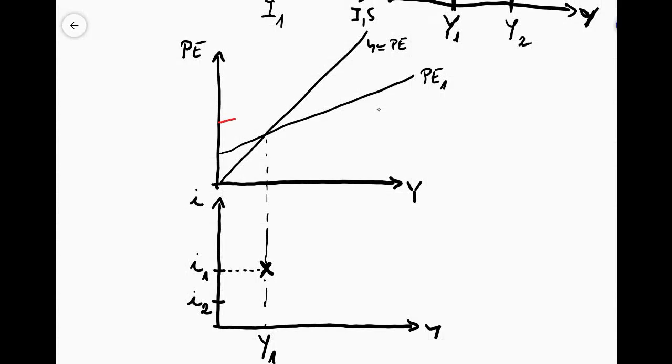So that means that there must be an upward shift in the planned expenditure curve and that would lead then to a higher level of real output. So we know that this must then be also a point along the IS curve. And again we get the same result that the IS curve is a negatively sloped line.